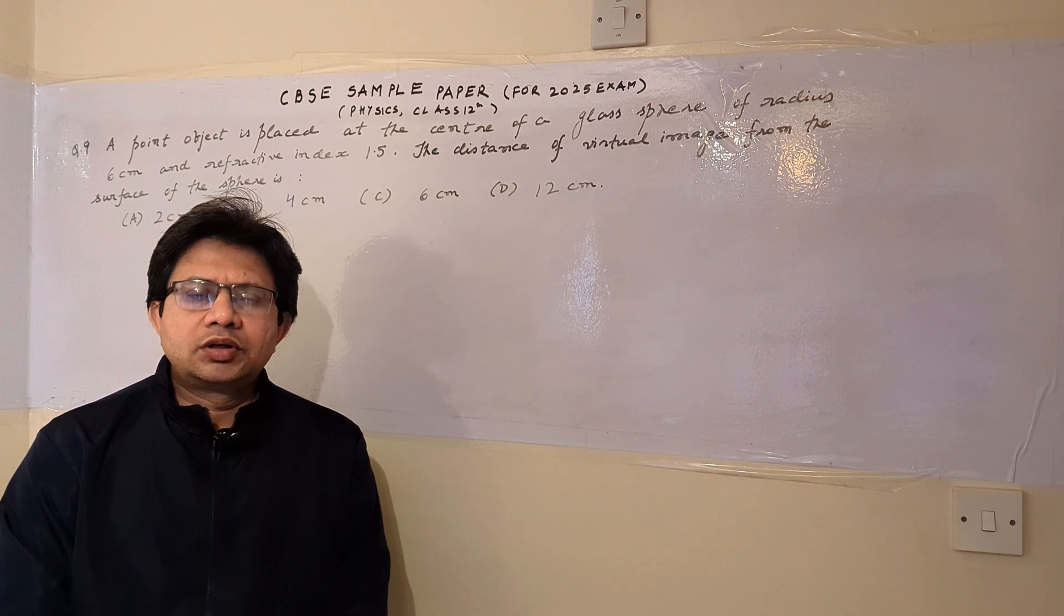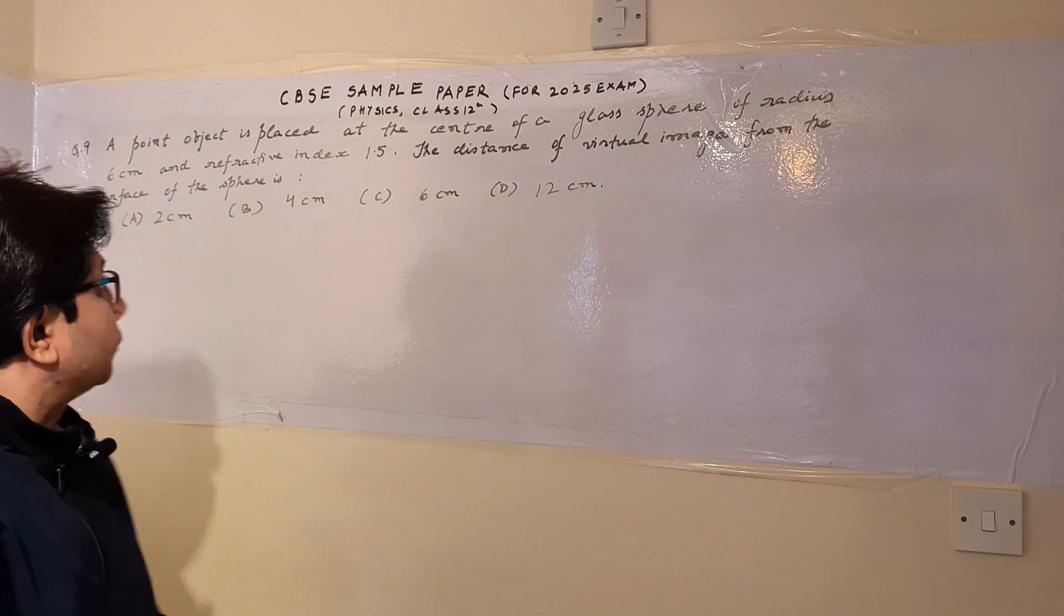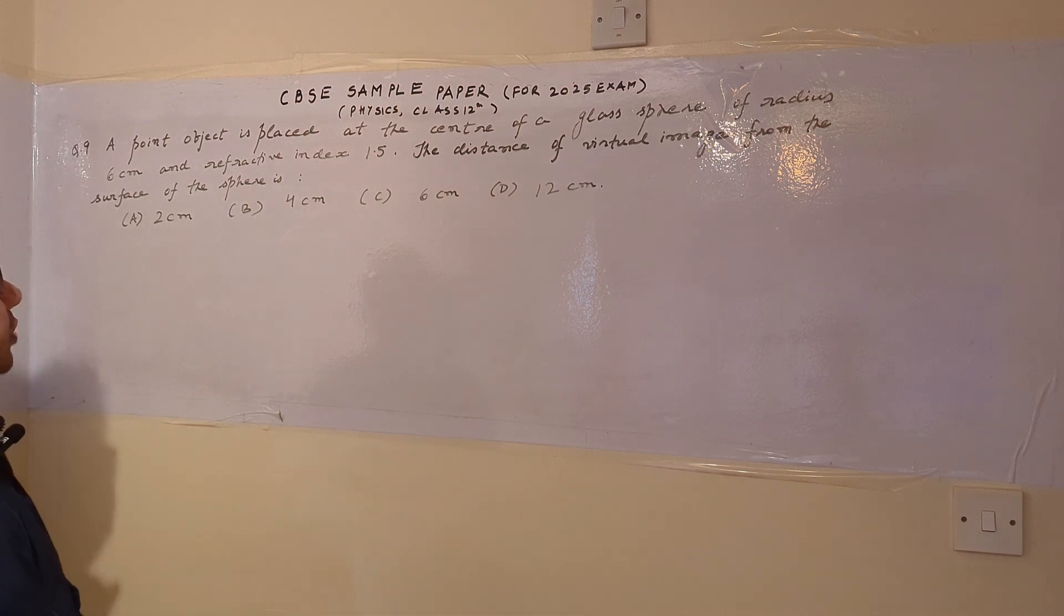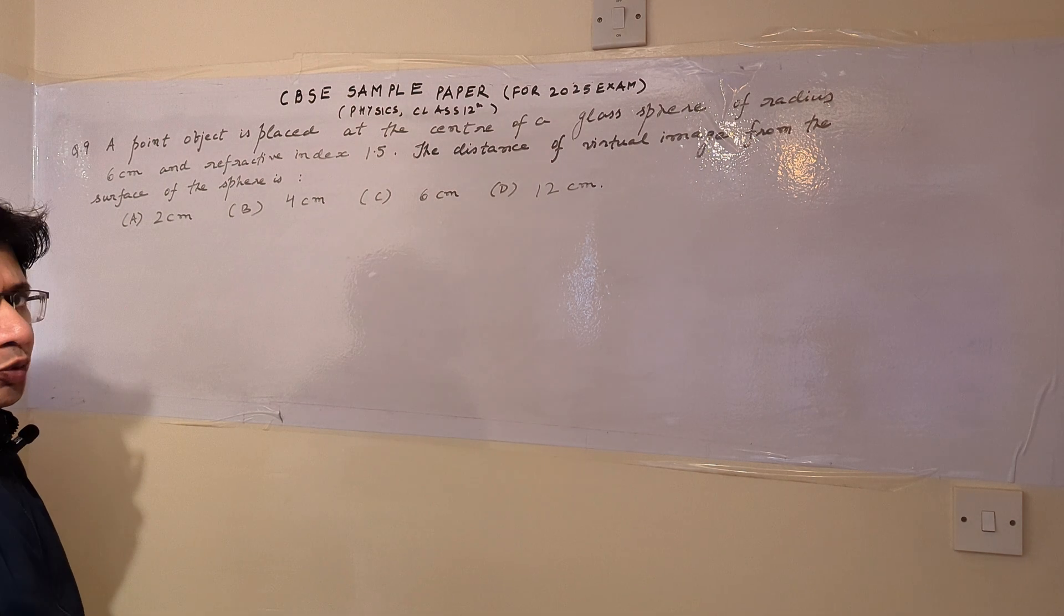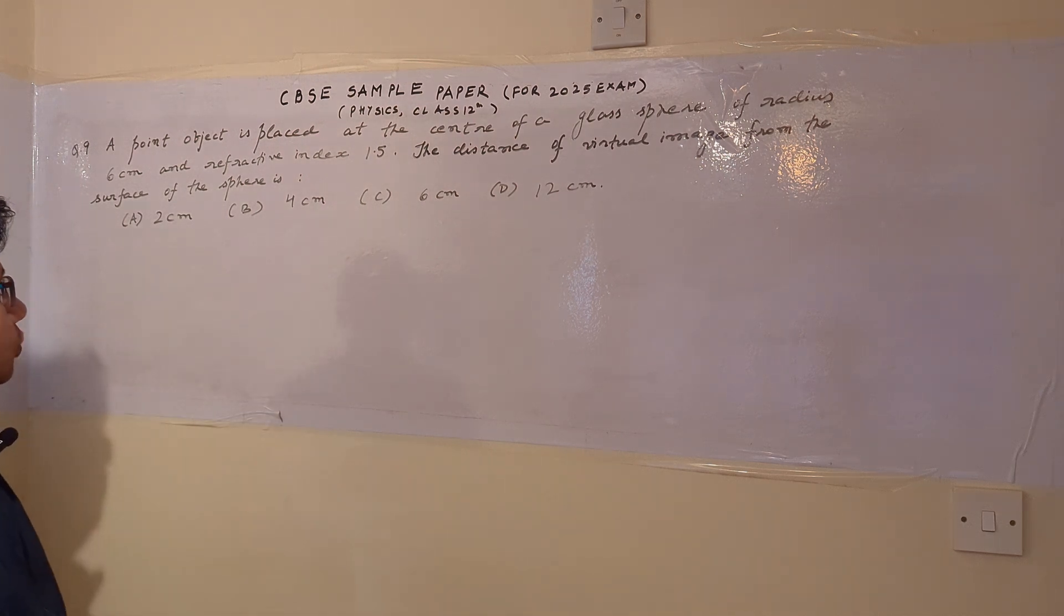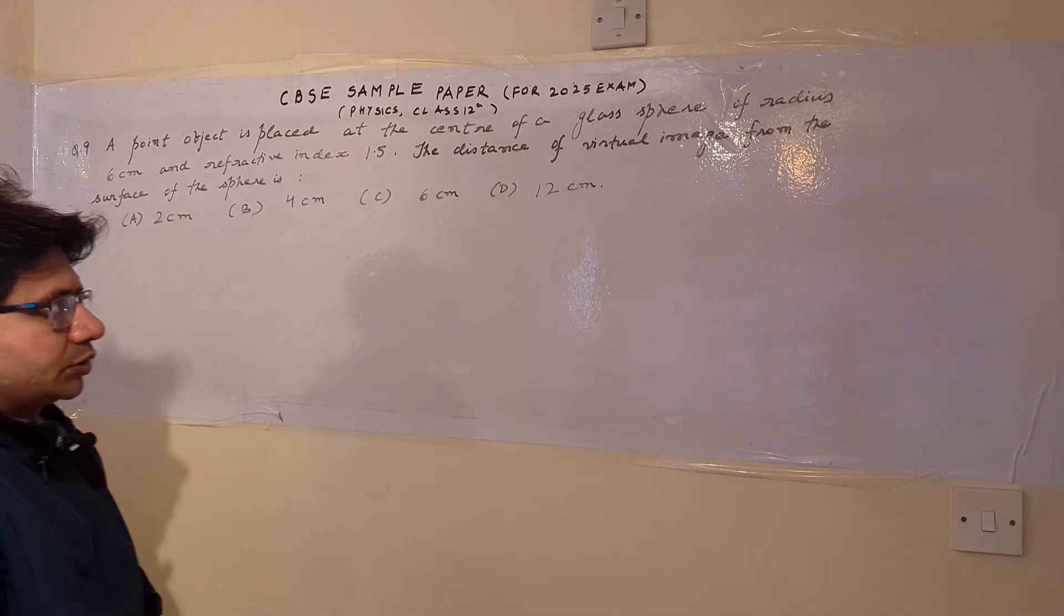Hello students, how are you? Hope you are reading well. Now the question is: a point object is placed at the center of a glass sphere of radius 6 centimeters and refractive index 1.5. The distance of virtual image from the surface of the sphere is option A 2 centimeters, option B 4 centimeters, option C 6 centimeters, and option D 12 centimeters.